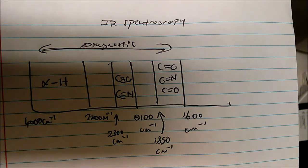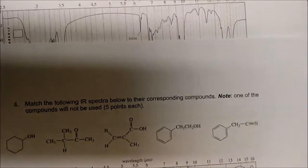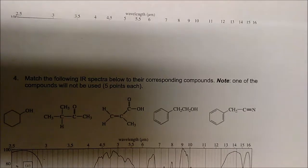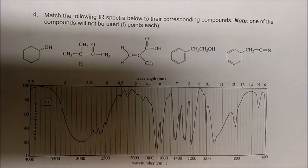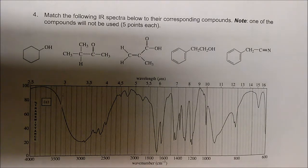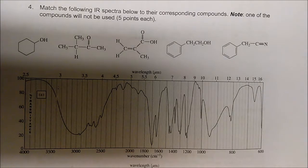So let's look at some examples and kind of tie this all together. We were given approximately four graphs and five compounds, and we want to match these compounds with their IR spectra. Let's start and analyze the situation just based on functional groups.